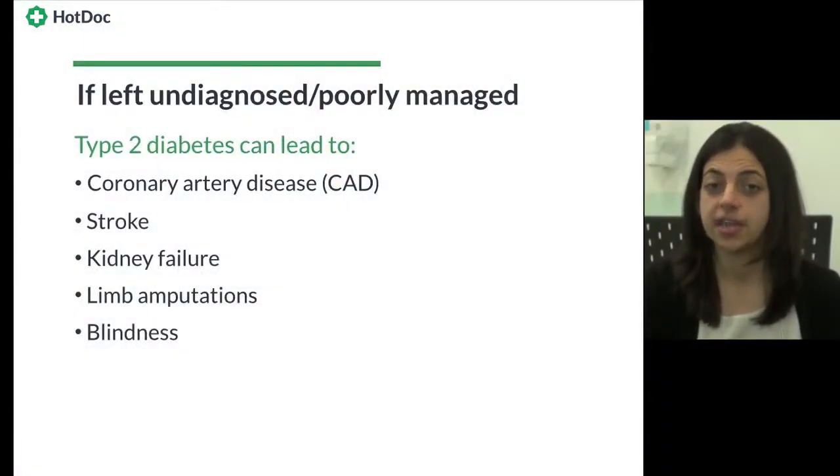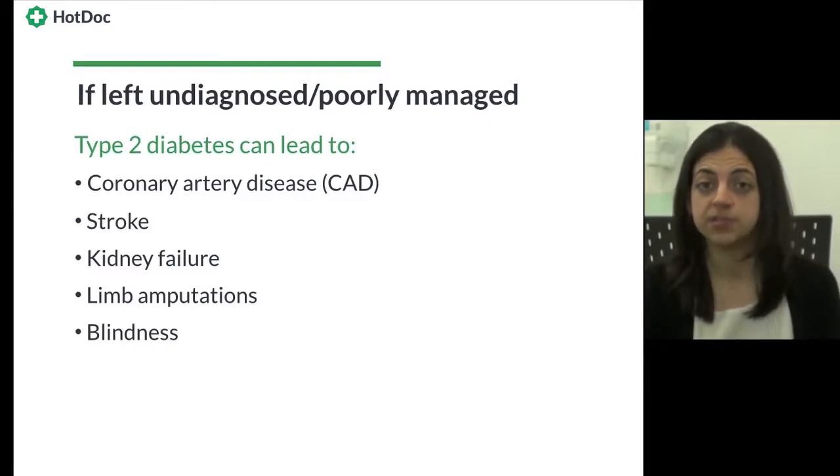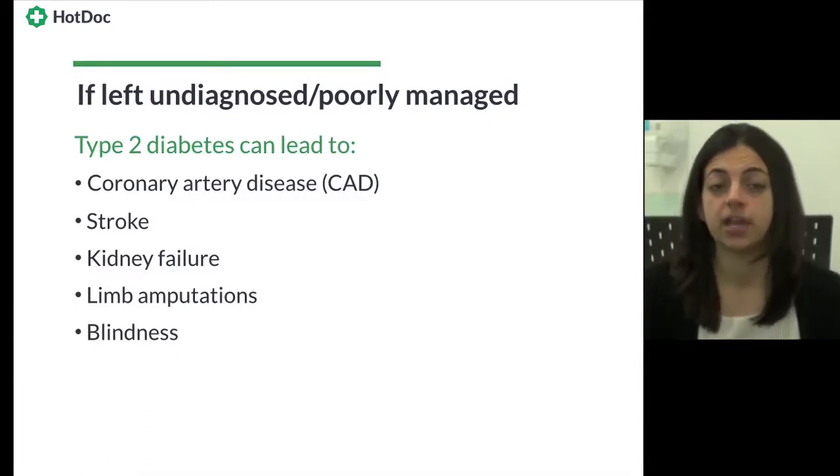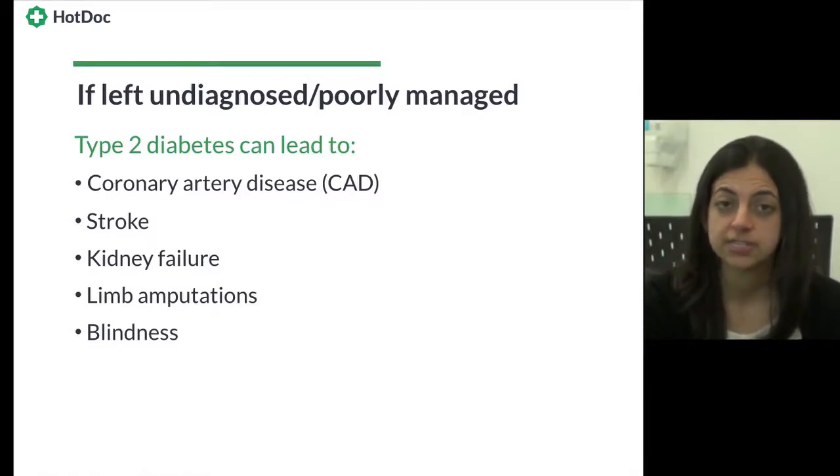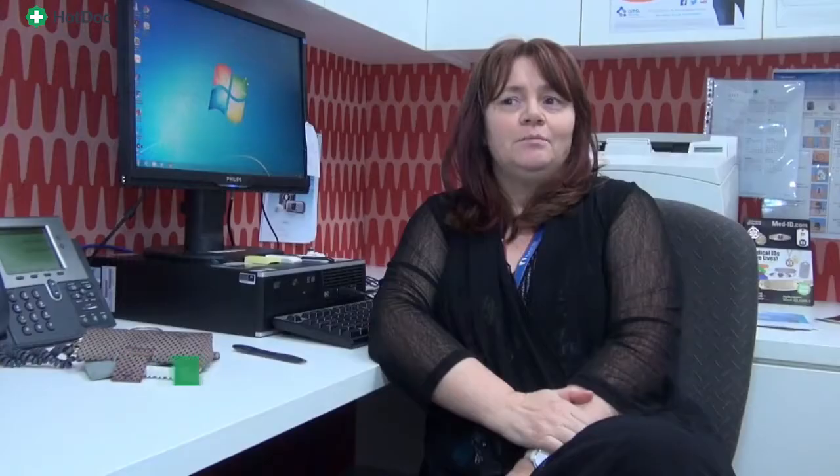This is why early diagnosis and optimal management of people with type 2 diabetes is critical. General practice has a key role in type 2 diabetes from identifying those at risk right through to caring for patients at end of life. GPs and nurses are in an ideal position to look after the patient because they see them all the time, build rapport, explain what diabetes is, why it's important to look after it, and ensure patients attend for regular review.